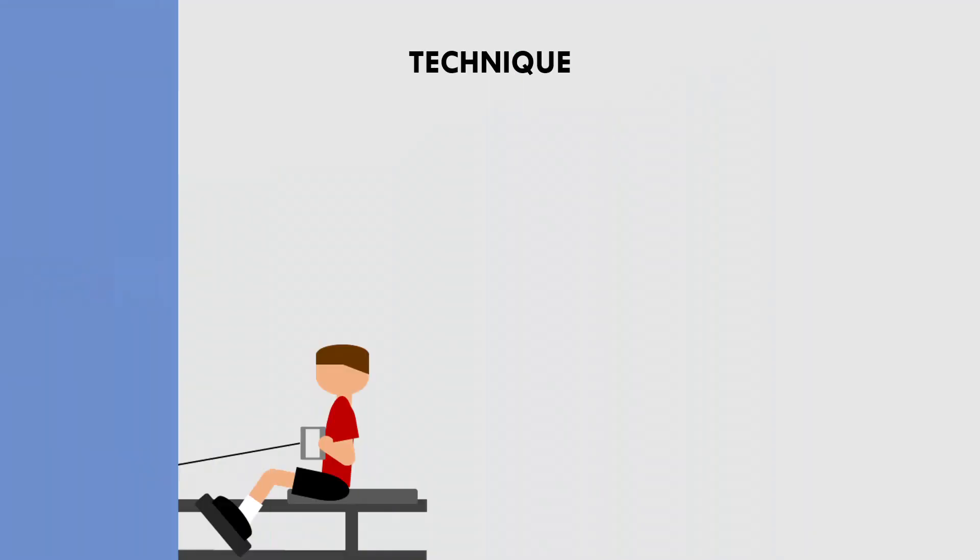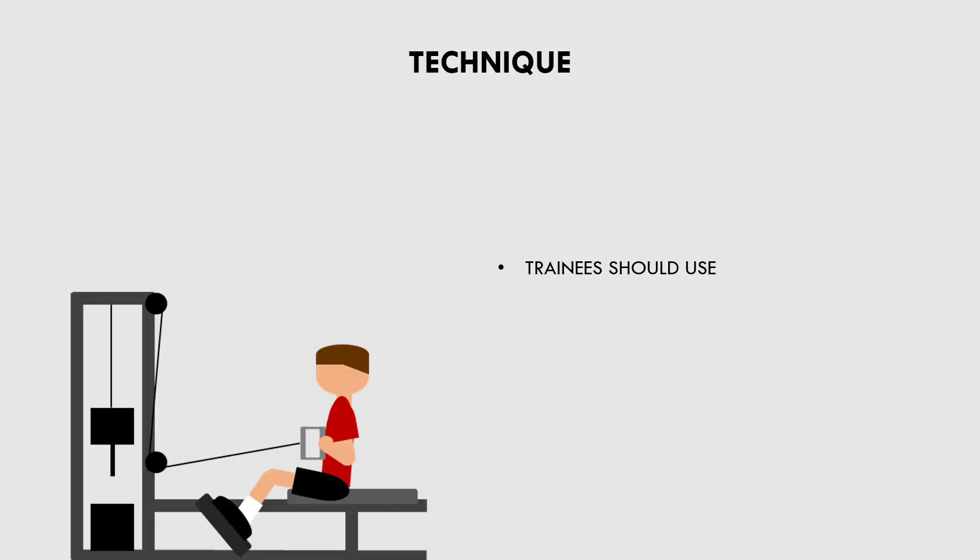The next factor which can acutely influence performance is technique. The goal with hypertrophy training is to perform the technique which best stimulates the target muscle group. This is different to strength training, where the goal is to perform the technique which allows the most weight to be lifted. Therefore, if we make technical changes to an exercise, we may not be able to use as much weight or lift as much load.